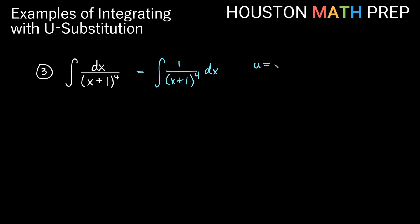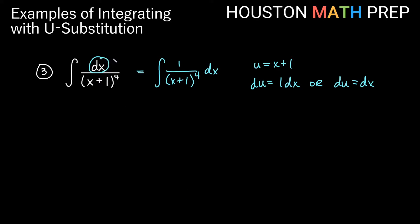A good reason to choose u equals x plus one is that the derivative of x plus one is just one, and we have that up here. So if u is x plus one, then du is equal to dx. Going into the integral, this becomes du on top, and everything down here becomes u to the fourth on the bottom. So rewriting, we have the integral of du over u to the fourth, which is the same as the integral of u to the negative four du.